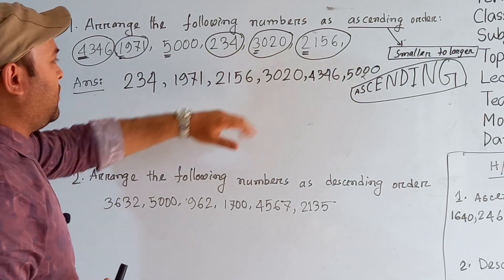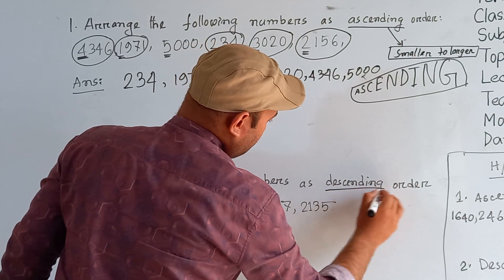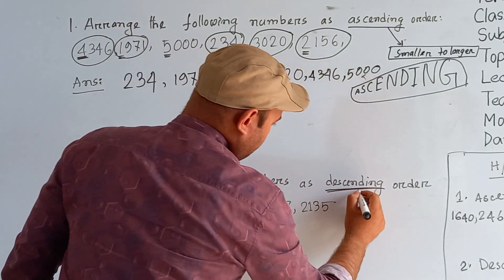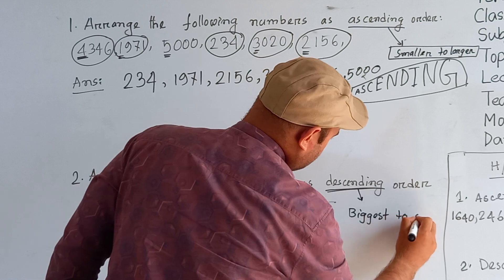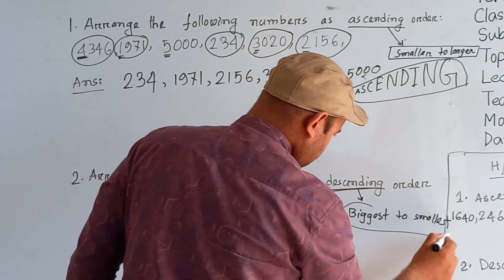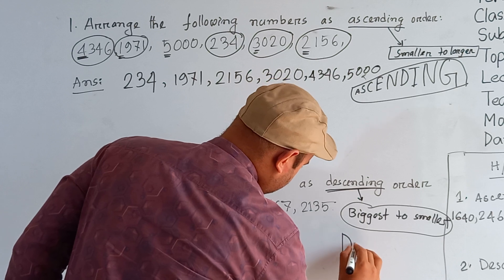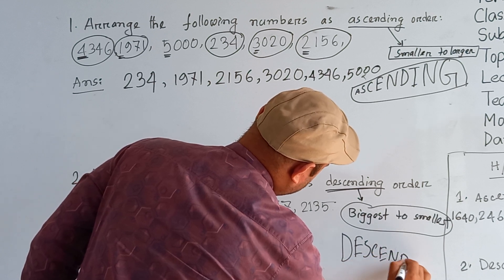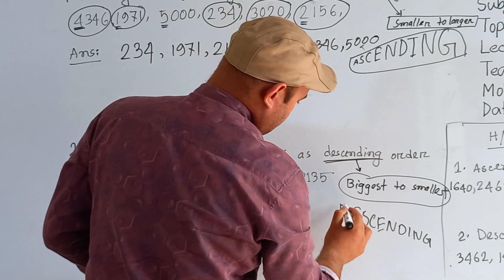Now look at question number 2: arrange the following numbers in descending order. Descending order is the opposite of ascending order — you arrange numbers from biggest to smallest. Just like in the alphabet, 'D' comes before and a later letter like 'Z' or 'G' is further along — so descending means you write the biggest number first and the smallest number last.